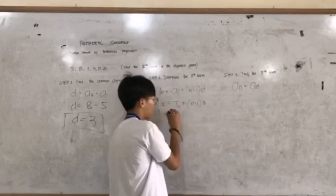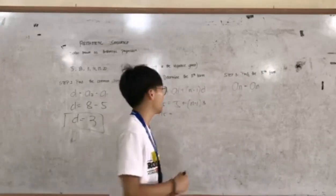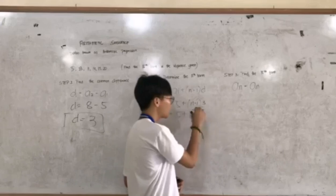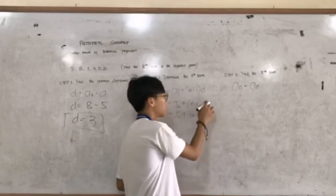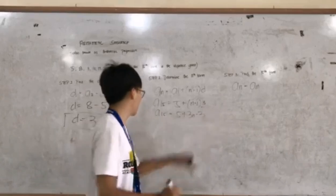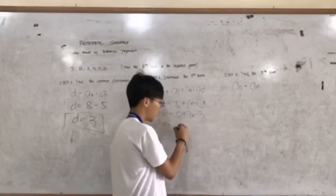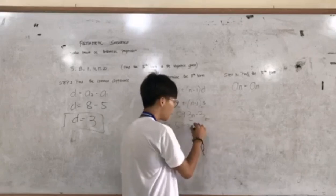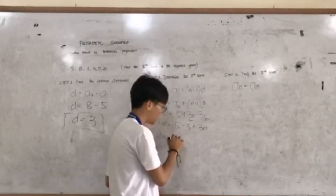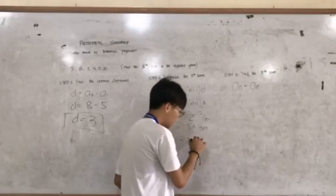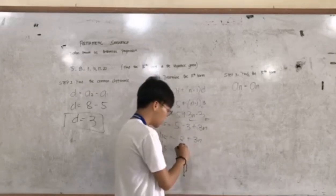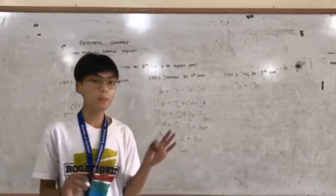Now let's use the distributive method. Distributing the common difference inside the parenthesis: 5 plus 3 times n minus 3 times 1, which gives 5 plus 3n minus 3. Combining like terms, 5 minus 3 is 2, so a sub n equals 2 plus 3n. This is our nth term formula.